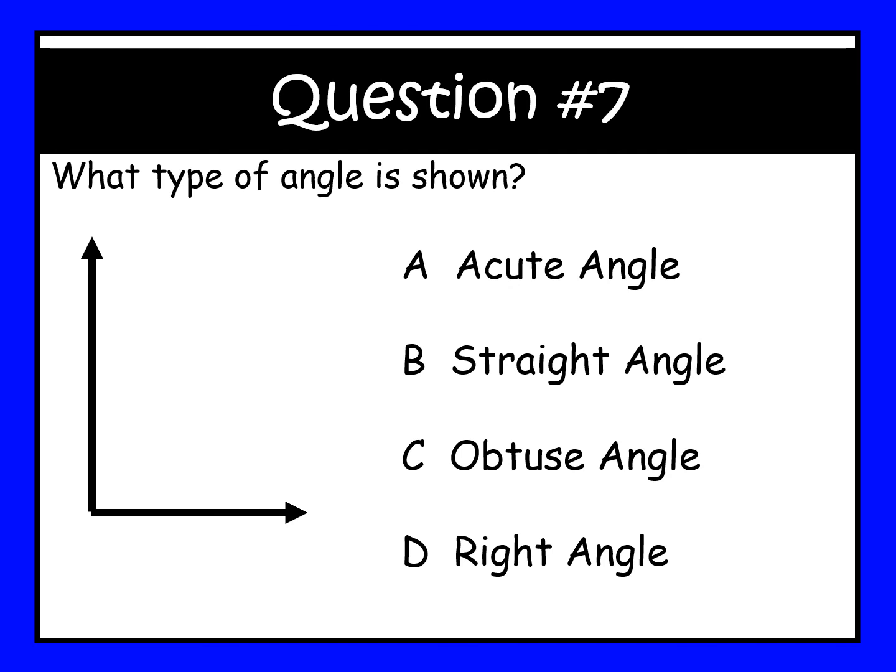Question number seven. What type of angle is shown? A: acute angle, B: straight angle, C: obtuse angle, D: right angle. You have 20 seconds to answer this.